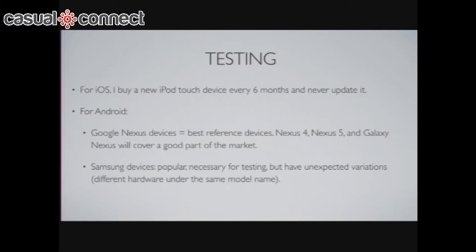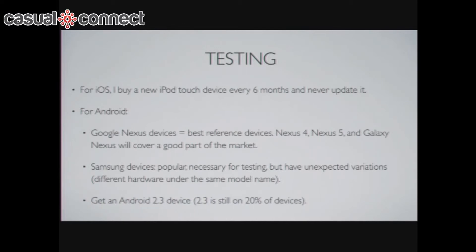Samsung devices are popular — that graph shows more than half is Samsung, so you should really get one because it's the number one device in the market. But be very careful: when you hear the term S2, S3, S4, I think there are 12 S2s with different hardware variations and all different OpenGL implementations, and five or six different S3s in different countries. So it's a misnomer — be careful with that. Also, get a device that supports Android 2.3; it still has 20% of the market, it's your oldest target and you should be focused on it.